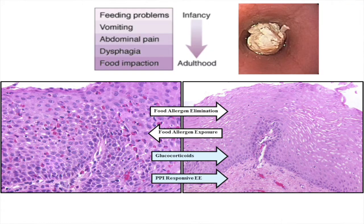An organ normally doesn't have a single eosinophil. On the right, one can see this disease actually is reversible. It responds to elimination of specific food antigens that are driving the disease. It does reverse, but it actually relapses upon adding the food back to the diet, so it's a dynamic process. There are other treatments, including glucocorticoids as well as proton pump inhibitors, and one can see a complete reversibility of the histology.